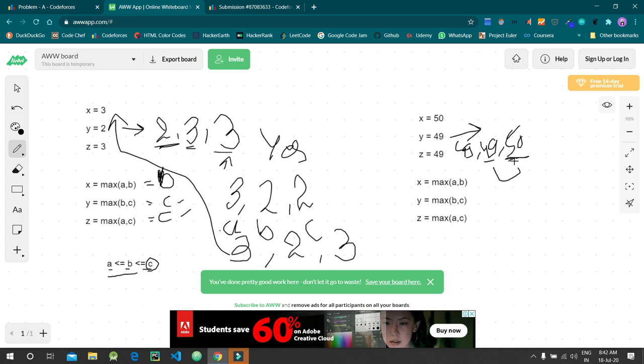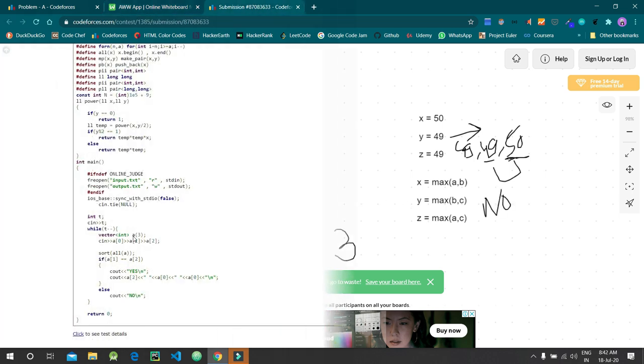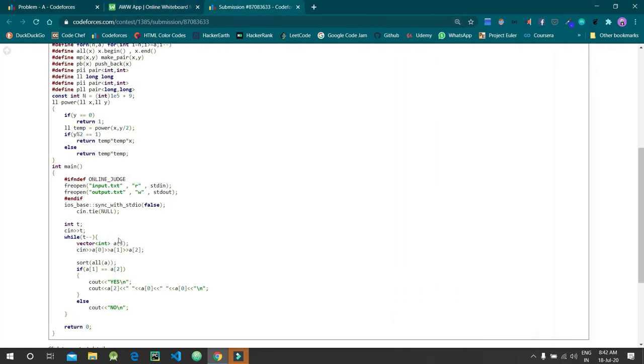Looking at the solution: t represents the number of test cases. I have taken an array. As I said, I'll be sorting it first. After sorting, we check if the last two values are equal. If they are, then print yes and print the last value once and the first value two times. Else, print no. The link to the solution is in the description.